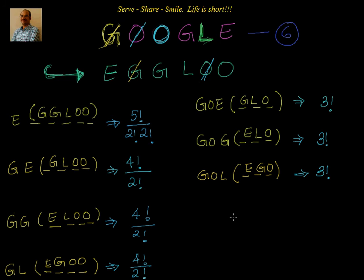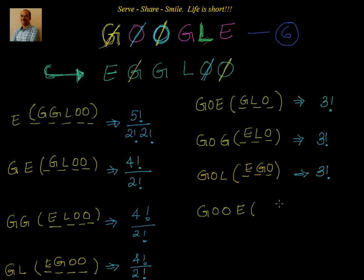G, O, L is over. After G, O, L we will have G, O, O. Once I go to G, O, O, the first thing I do is cross off both O's and come back to the first position. So now we have G, O, O and then we need the next letter. We have E starting. So we take all words starting with G, O, O, E. I have two slots to be filled, and those need to be filled with G and L. There are only two ways — factorial 2.